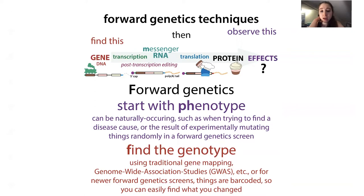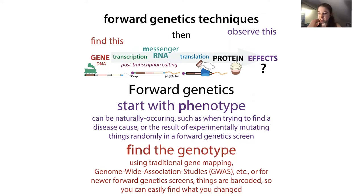With forward genetics approaches, we're looking at the phenotype and asking what's causing it. Traditional methods involve gene mapping, and these days there are also things called GWAS — genome-wide association studies — or genetic screens. In screens with fruit flies, researchers introduce mutations using random mutagens — chemicals that cause mutations kind of randomly. It can be hard to find them because they're random, so you then have to go in and see what mutations you actually made.